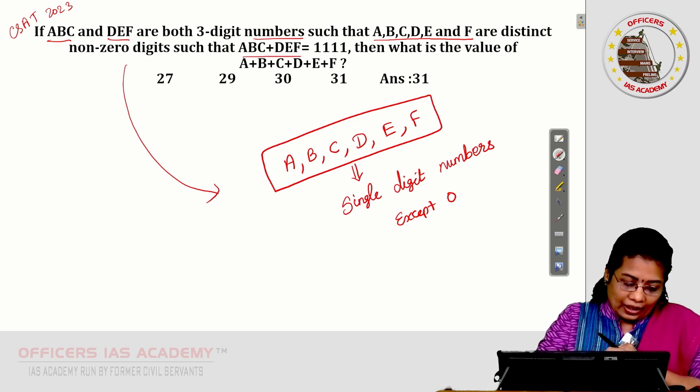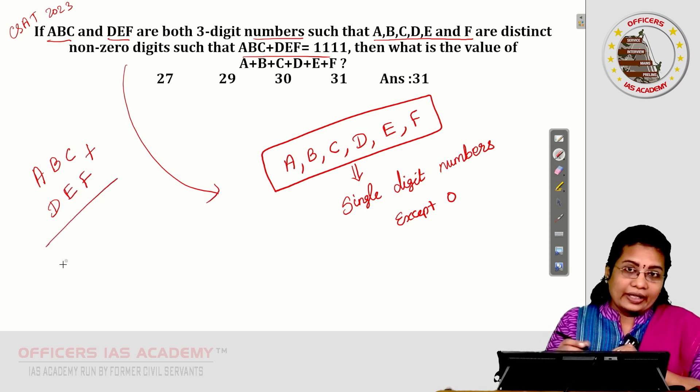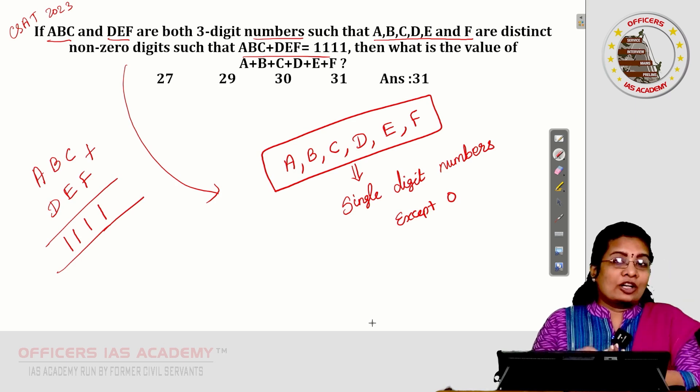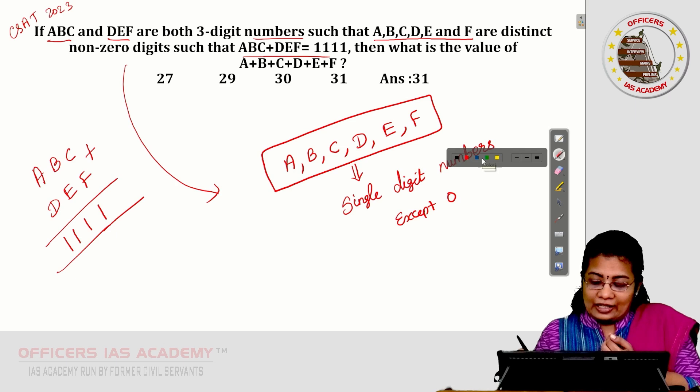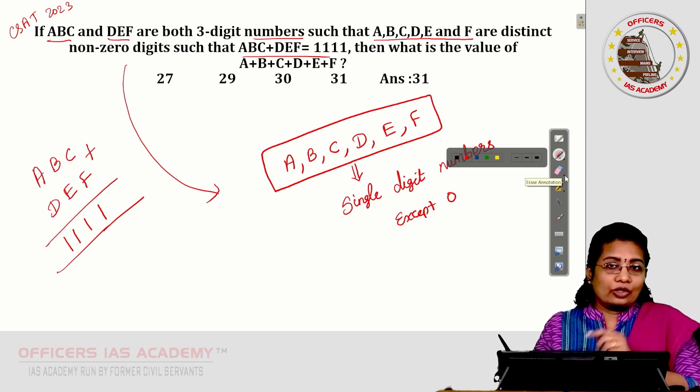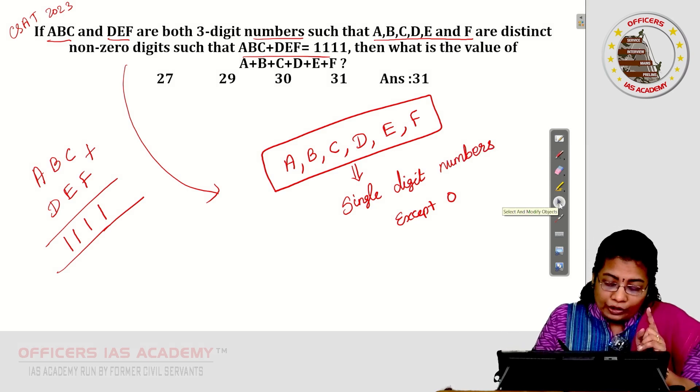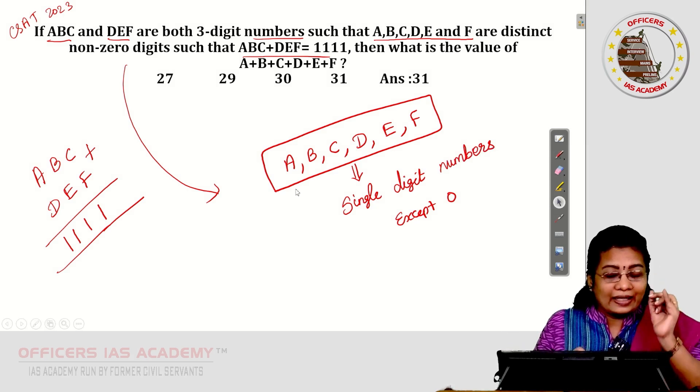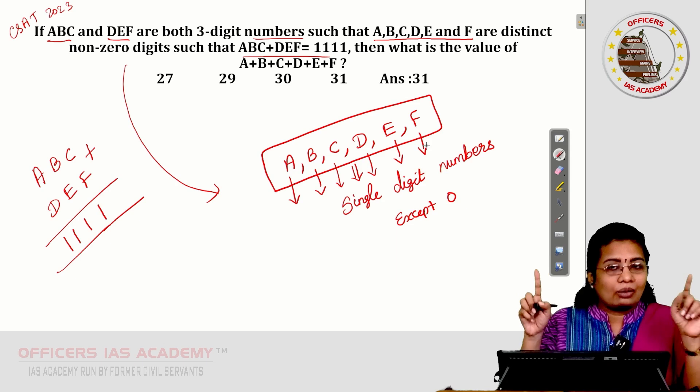Also given, if you add ABC plus DEF, you will get the result 1111, a four-digit number as the answer. And here you want to know one thing. It is not the requirement you need to find what is exactly A, B, C, D, E, F. This is not the requirement of the question.